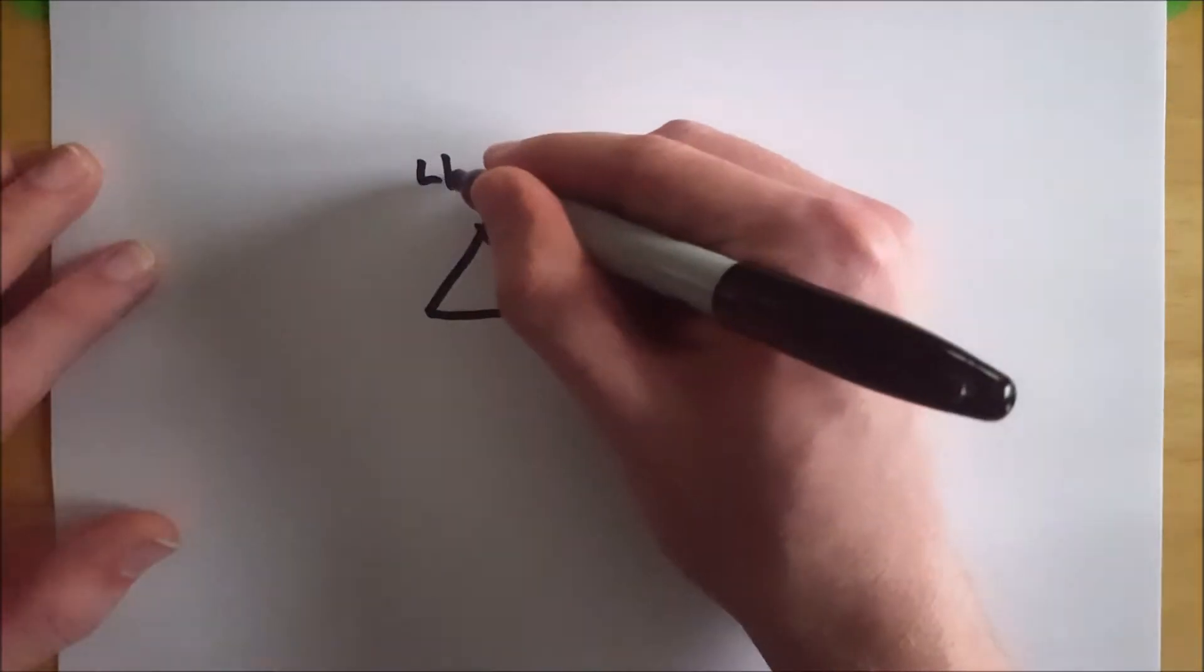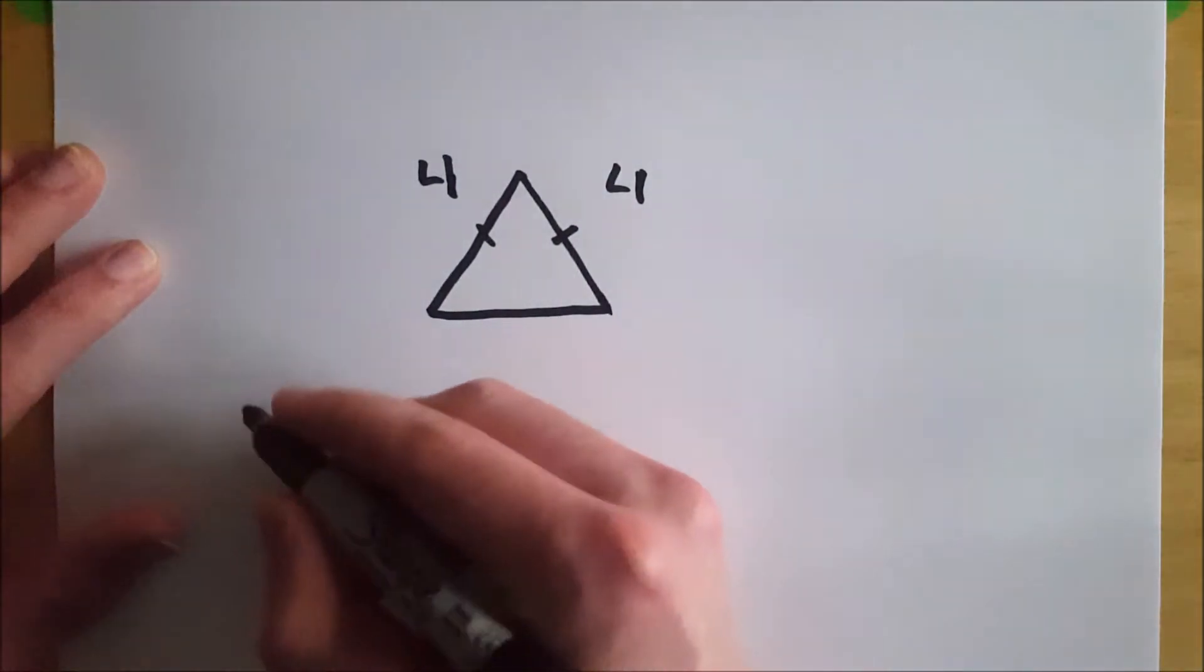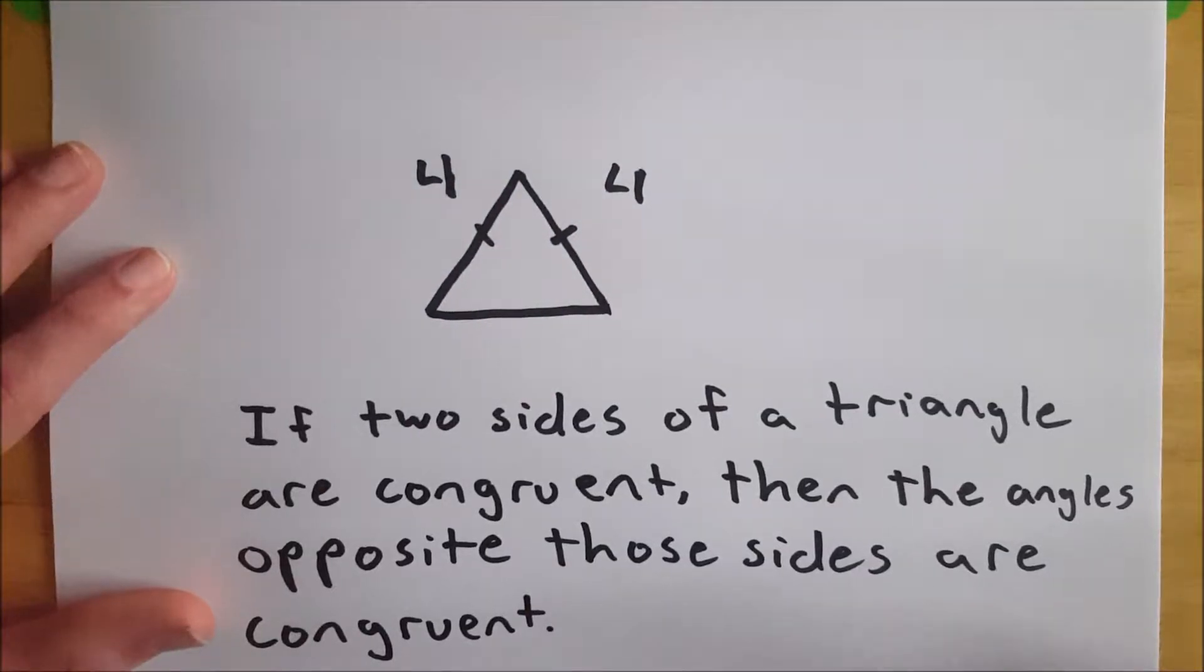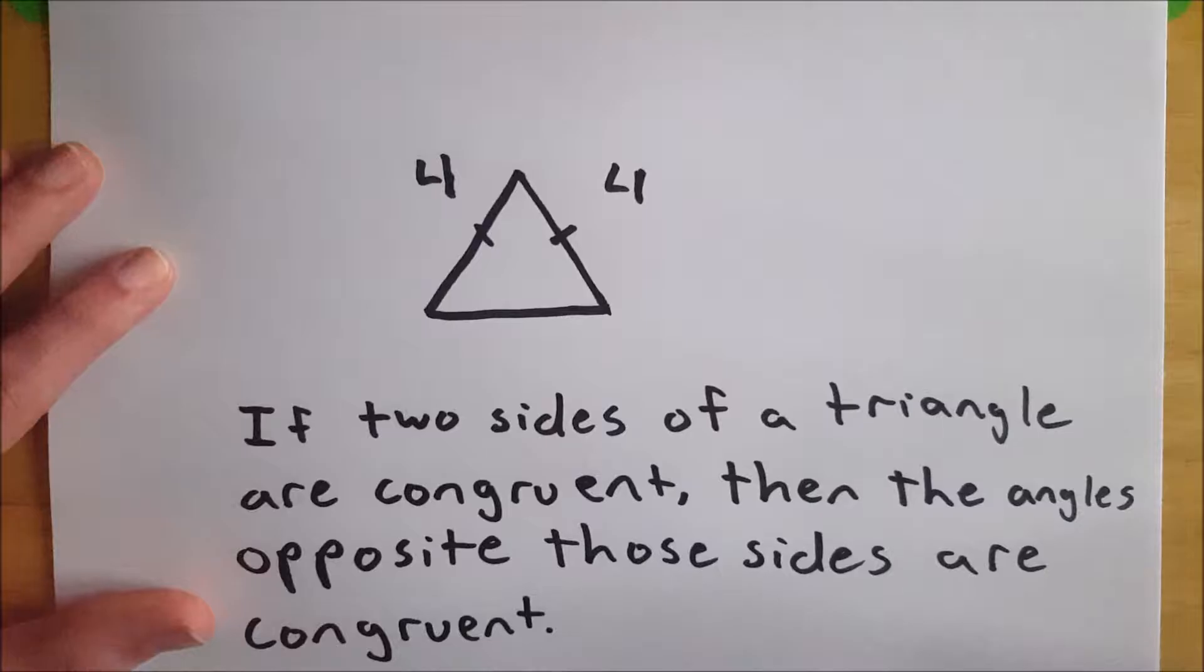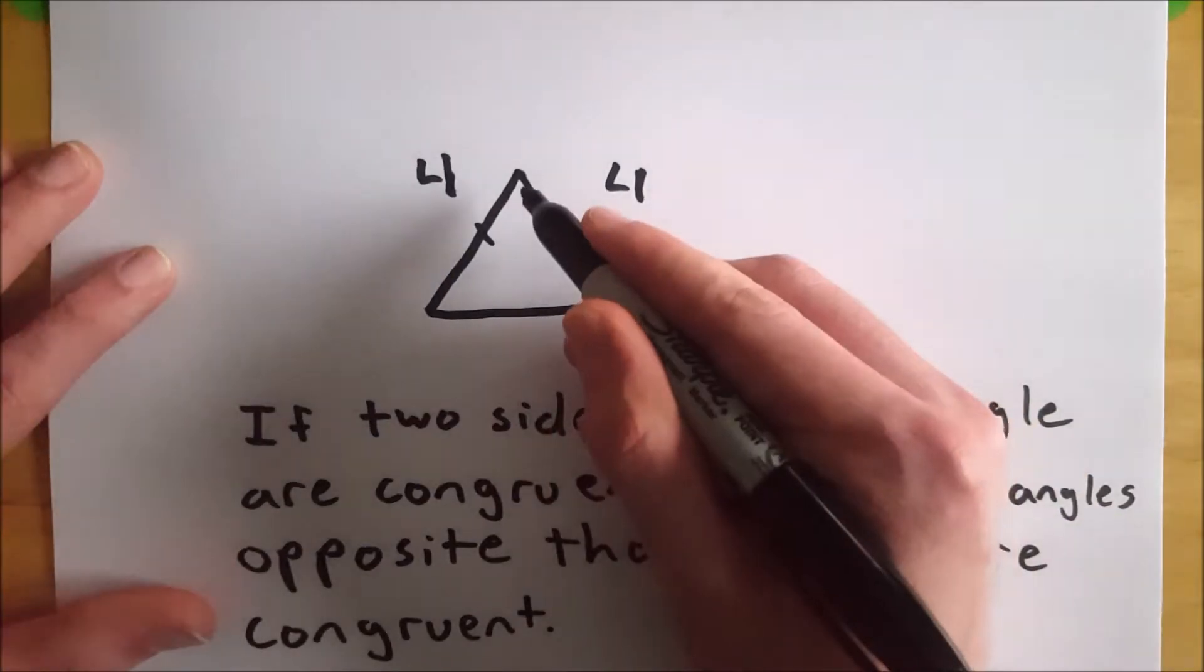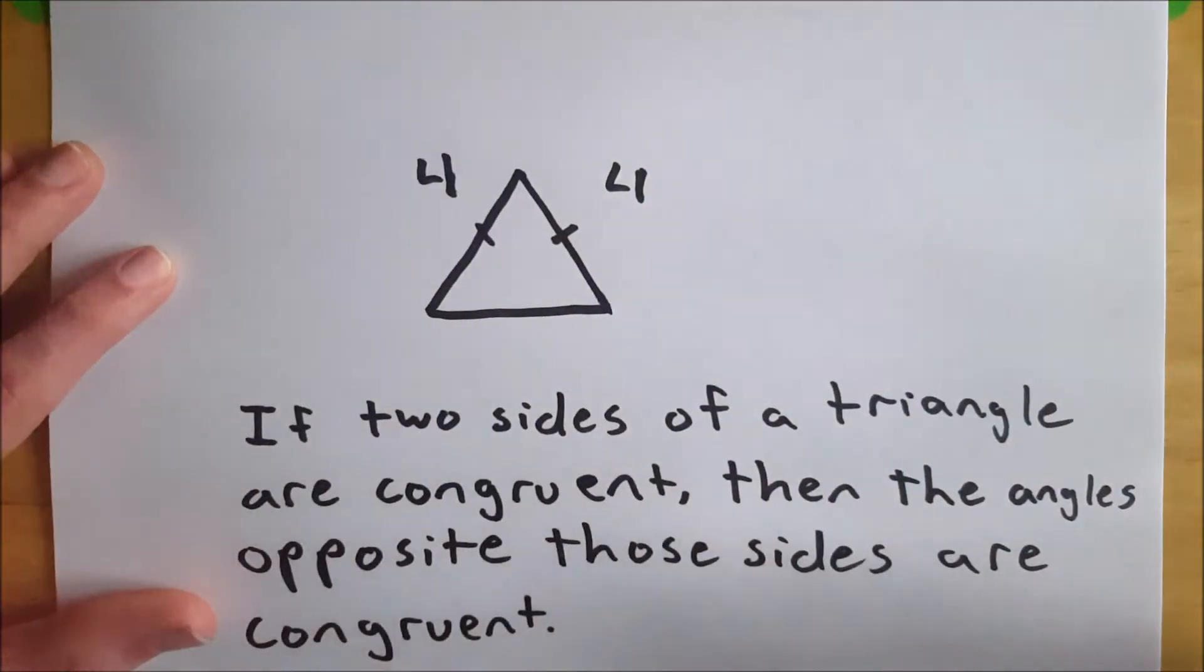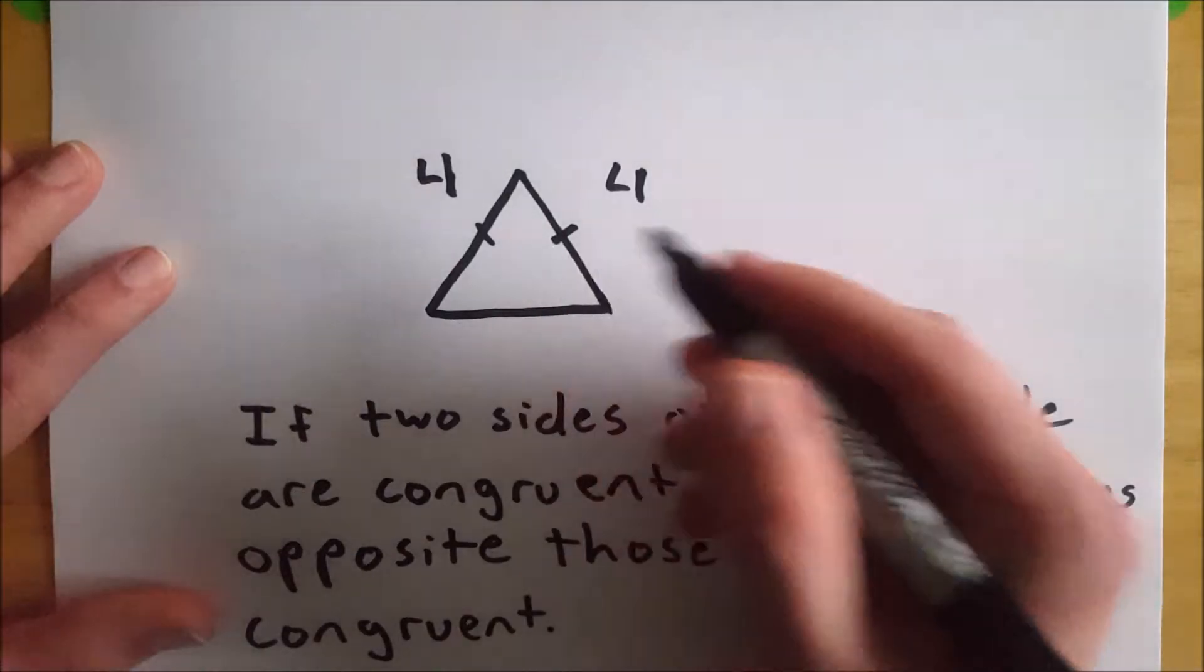And what does that theorem say? Well, it says if two sides of a triangle are congruent, then the angles opposite those sides are congruent. So because these two sides are congruent, the angles opposite them are congruent.